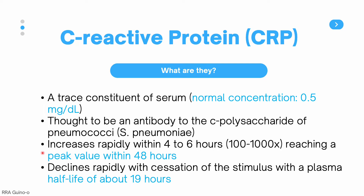CRP levels increase rapidly within 4 to 6 hours, up to 100 to 1,000 times the normal level, and they reach their peak value within 48 hours. They also decline rapidly with the cessation of stimulus, with a plasma half-life of about 19 hours — meaning every 19 hours, the CRP level in the blood decreases by about half.